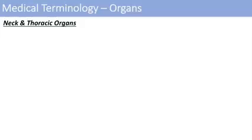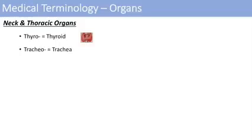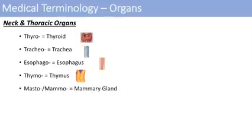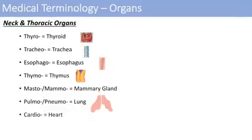The next organs are the neck and thoracic organs. Thyro is the prefix for the thyroid. Tracheo is for the trachea. Esophago is for the esophagus. Thymo is for the thymus, the immune system organ relatively close to your heart. Masto or mammo relates to the mammary gland or the breast. Pneumo is for the lung. And cardio is for the heart.